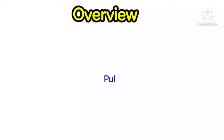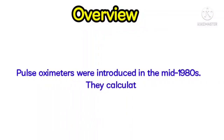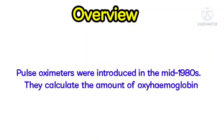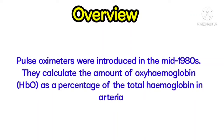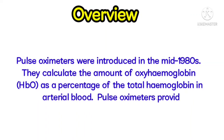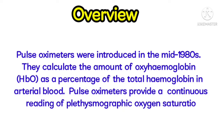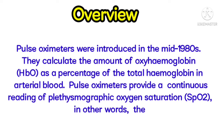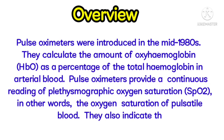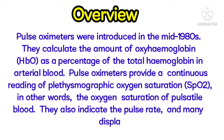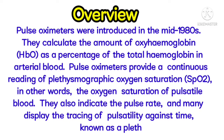Overview. Pulse oximeters were introduced in the mid-1980s. They calculate the amount of oxyhemoglobin as a percentage of the total hemoglobin in arterial blood. Pulse oximeters provide a continuous reading of plethysmographic oxygen saturation — in other words, the oxygen saturation of pulsatile blood. They also indicate the pulse rate, and many display the tracing of pulsatility against time, known as a plethysmograph.